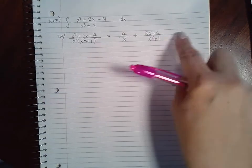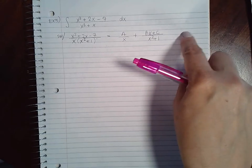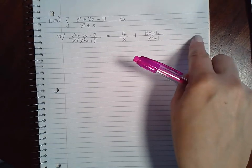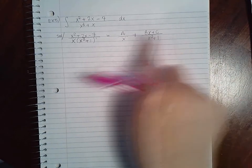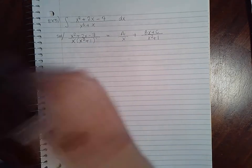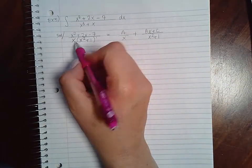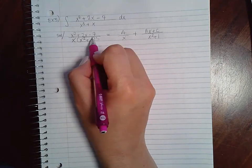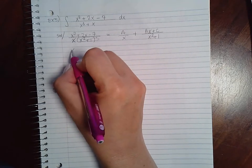Now if it were squared, I would need another term like dx plus e over x squared plus 1 squared. But I don't have a square, just have a 1, so I can stop with my setup here. Now if I multiply by the common denominator, both would cancel and I'd end up with just the numerator.